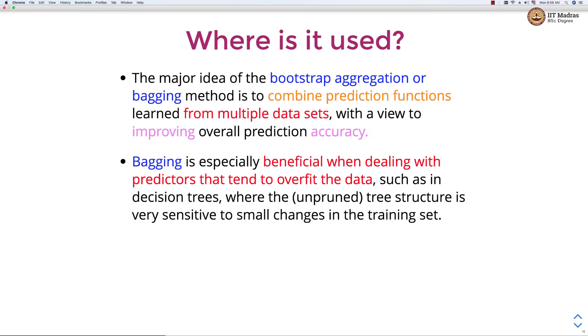Let's see where bagging is useful. Bagging stands for bootstrap aggregation and the major idea of bagging is to combine prediction functions learned from multiple data sets with a view to improve overall prediction accuracy. Bagging is especially beneficial when dealing with predictors that tend to overfit data, such as in decision trees where the untrimmed tree structure is very sensitive to small changes in the training data. In some sense, bagging is useful when we have estimators with high variance.